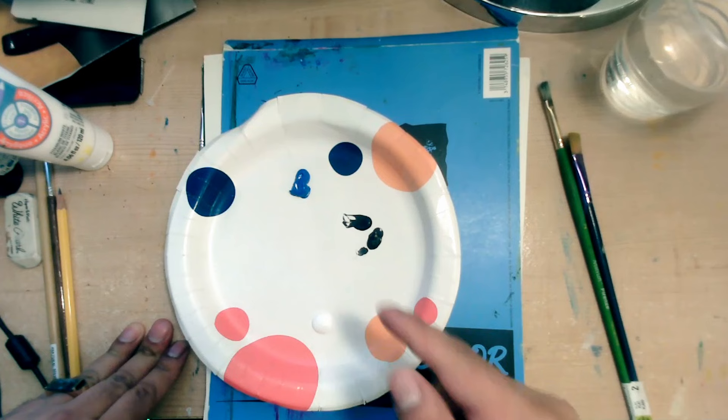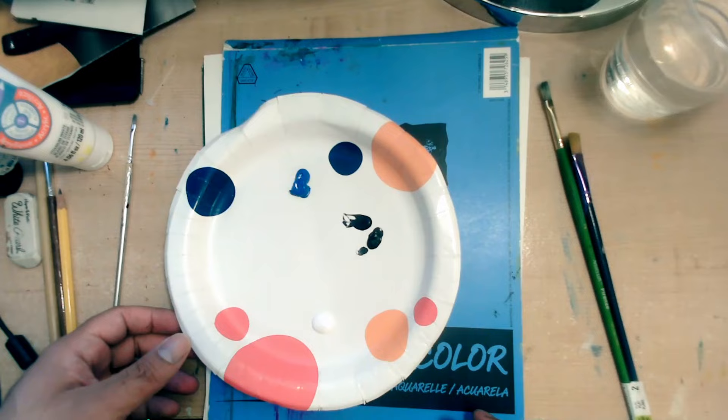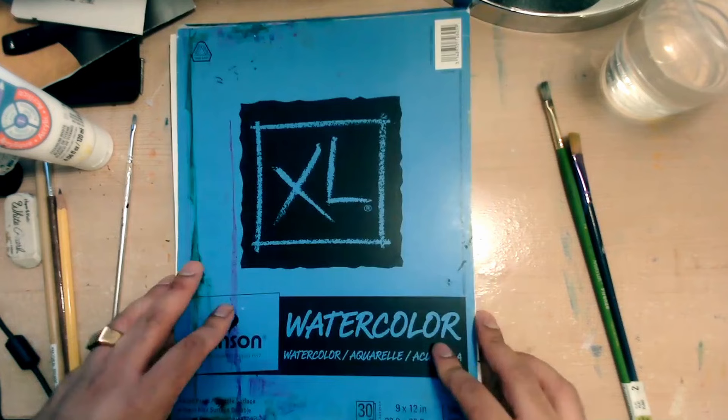So what I want to do is I want to draw four squares. And I do suggest that you get a paper pad like this. It could be watercolor or mixed media paper.